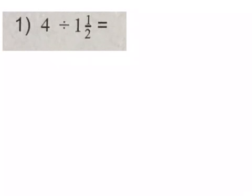We are going to model our division problems. The first thing we want to do is give our two numbers common denominators. The four is a whole number, so to make a whole number look like a fraction we put it over one. I can see this has a one as the denominator, and one and one-half has a two as the denominator. So I'm going to switch the four over one and make it out of two by multiplying by two on top and bottom.